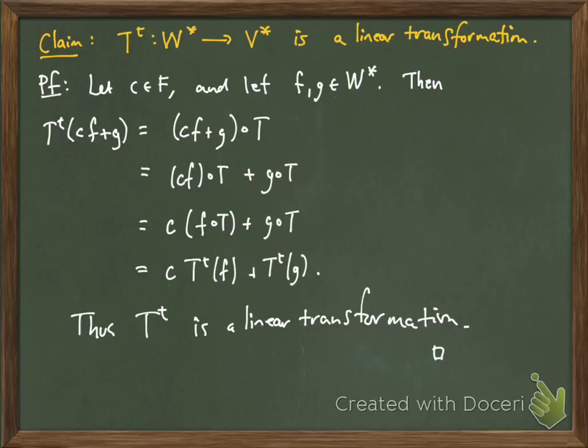And so T transpose does give you a linear transformation on the dual spaces. But notice, it swaps the order, right? So if T is a linear transformation from V to W, T transpose is from W star to V star.